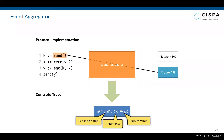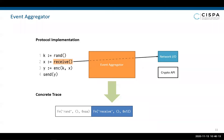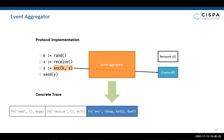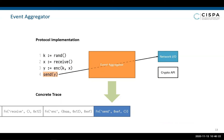The event aggregator emits events containing the name, argument, and return value of the intercepted function calls. The argument and return values are in general bit strings. In the same way, other function calls to the crypto API or network interfaces are recorded. Here is a call to an encryption function. Finally, a call to a send function, with which the ciphertext is sent over the network. In this way, the event aggregator constructs a growing concrete trace during protocol execution.